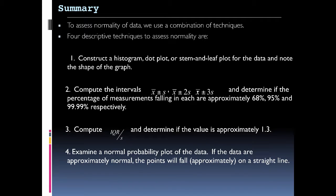So in summary, we want to first assess the normality of the data using a combination of techniques. We talked about four descriptive techniques: constructing the histogram, computing the intervals, computing the IQR over s, and examining the normal probability plot of data to see if the data make a straight line. If we have that straight line, then we know we've got a pretty normal plot.